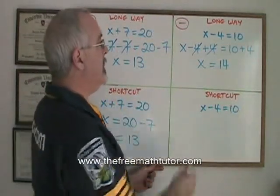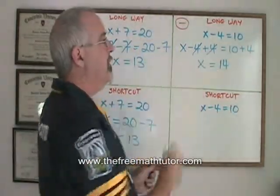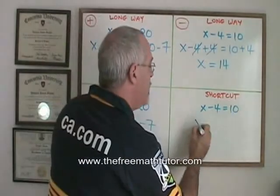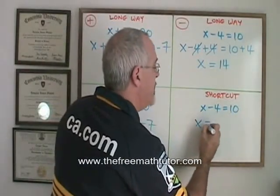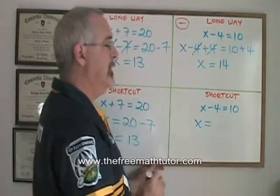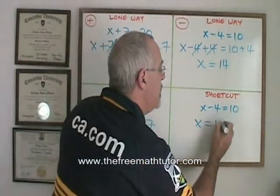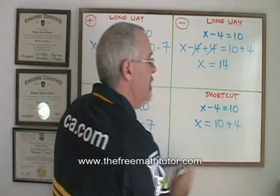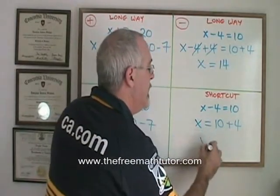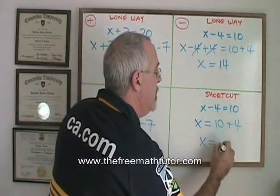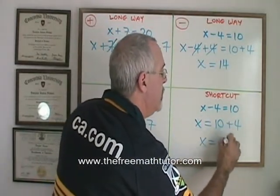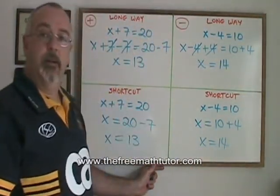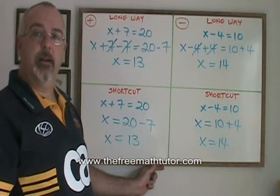With the shortcut, I don't bother showing the plus 4 on the left side. I just write my x isolated, and I show that I am adding 4 to the right side. x is equal to 10 plus 4, which is 14. It is the same answer, and it is the correct answer.